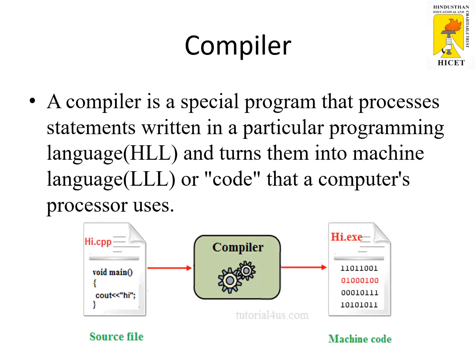A compiler is a special program that processes statements written in a particular programming language, that is called high-level language, and turns them into low-level language or code that a computer processor uses. The image shows that the source file is written in C programming and it is converted into machine-readable code, that is called the target program.